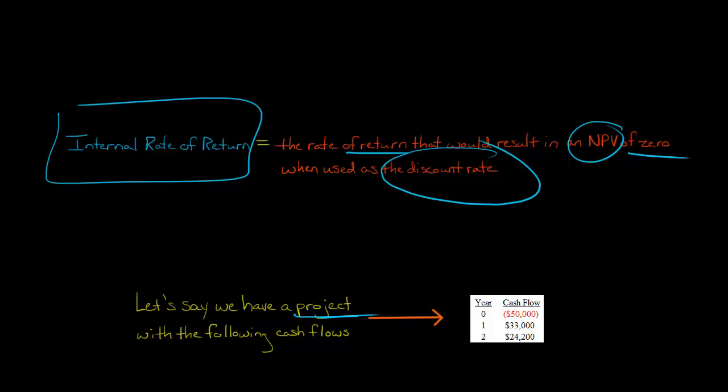So let me show you what I mean by that with an example. Let's say we have a project with the following cash flows. In year zero, which is today, there's a cash outflow of $50,000. So to take on this project, we have to pay out $50,000 today. But then one year from today, we're going to have a cash inflow of $33,000. And then two years from today, we're going to have another cash inflow of $24,200. So we've got one cash outflow today and then two cash inflows over the next two years.